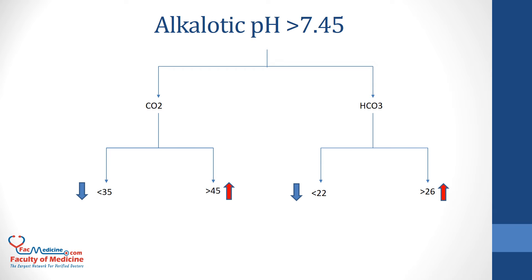The other scenario will be if the pH value is more than 7.45, which is alkalotic. Then we check CO2. If CO2 is decreased, then this is respiratory alkalosis. If it was normal, then we check HCO3. If it was increased, then this is metabolic alkalosis.